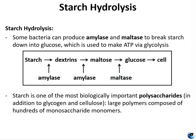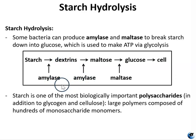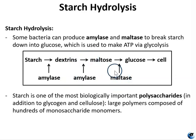Some bacteria can produce amylase and maltase to break starch down into glucose, which is then used to make ATP via glycolysis. In starch hydrolysis, amylase is the enzyme that breaks starch down into dextrin, then dextrin into maltose. Since enzymatic reactions do not break down or change the enzyme, amylase is still present and reusable. Maltase then breaks maltose down into glucose, which is the starting molecule for glycolysis. Starch is one of the most biologically important polysaccharides, composed of large polymers made up of hundreds of monosaccharide monomers.